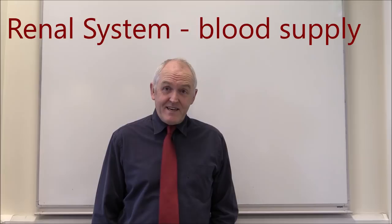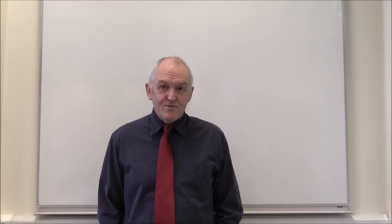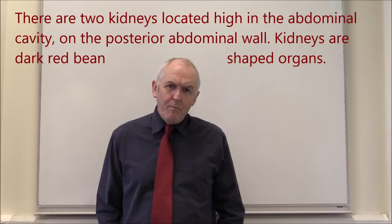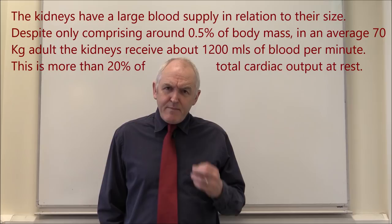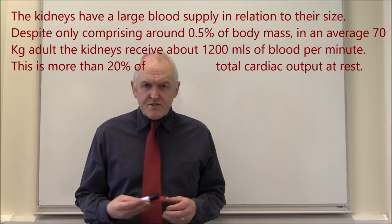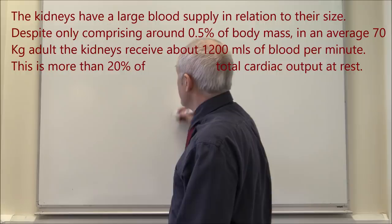Let's think about the blood supply to and from the kidney. There's a very intricate arrangement of arterial and venous vessels within the kidney, forming a really quite beautiful, intricate and somewhat complex vasculature. But if we think about it in simple terms, it's got some fairly basic components.